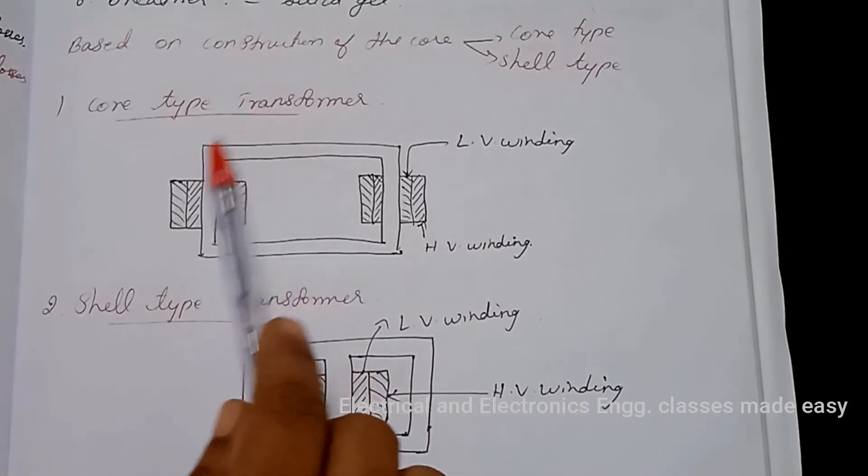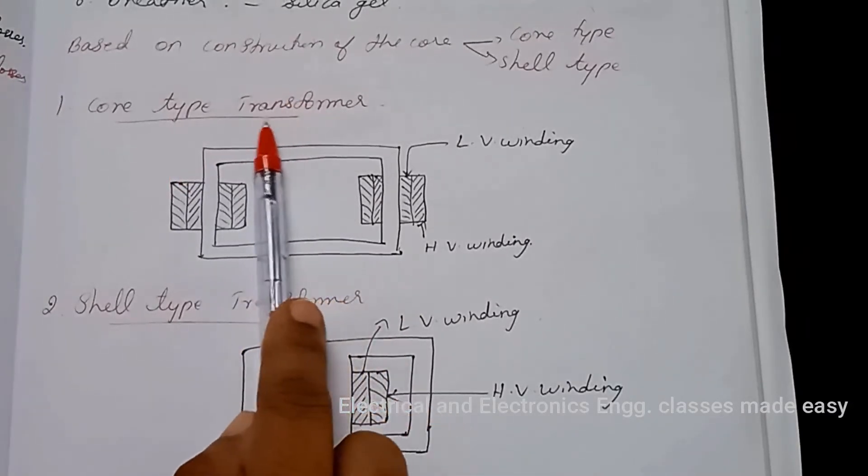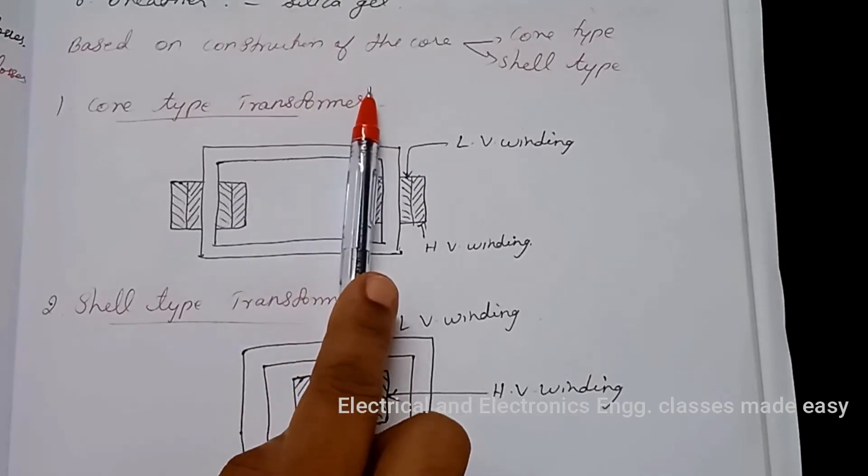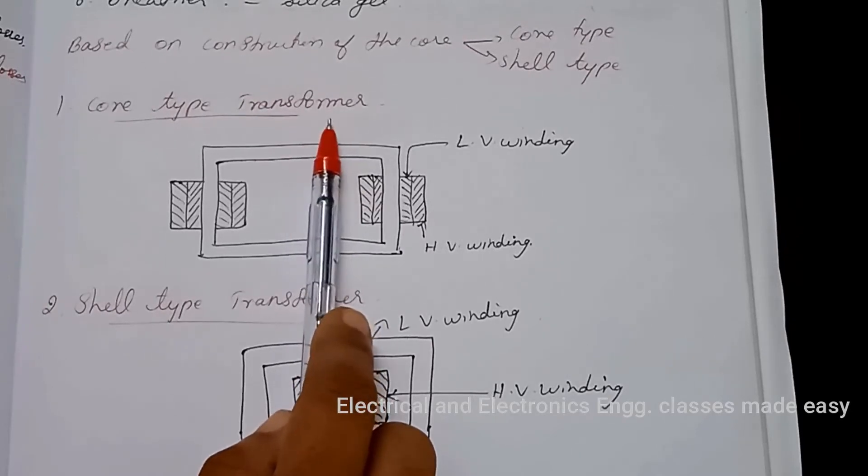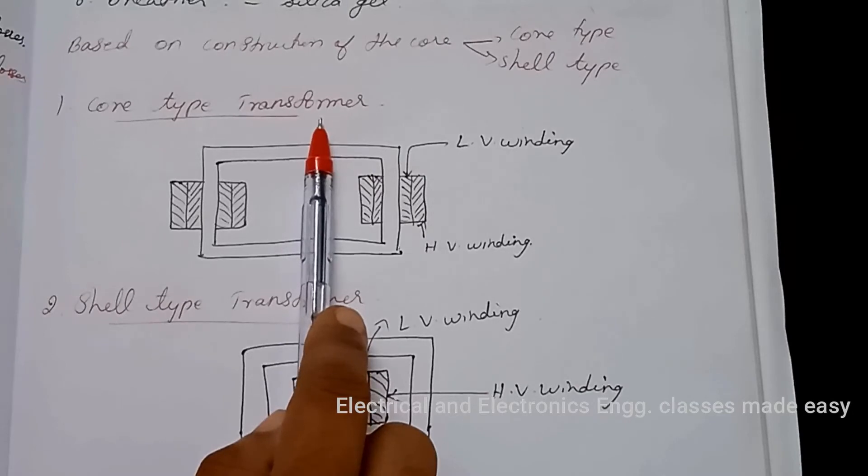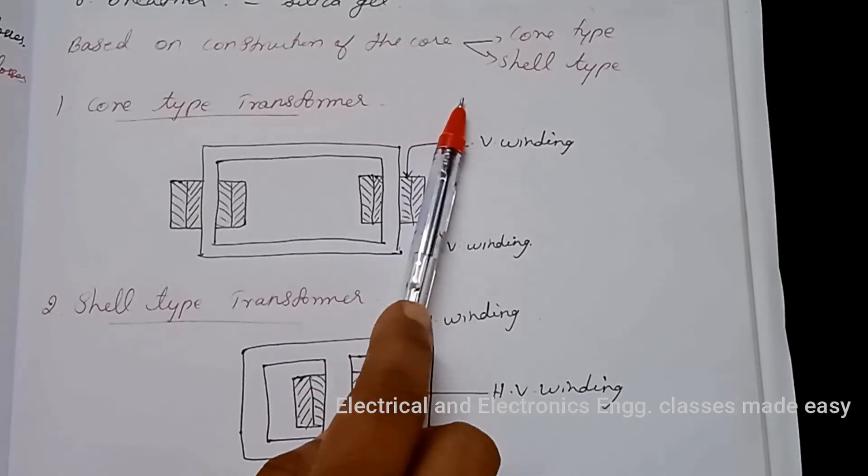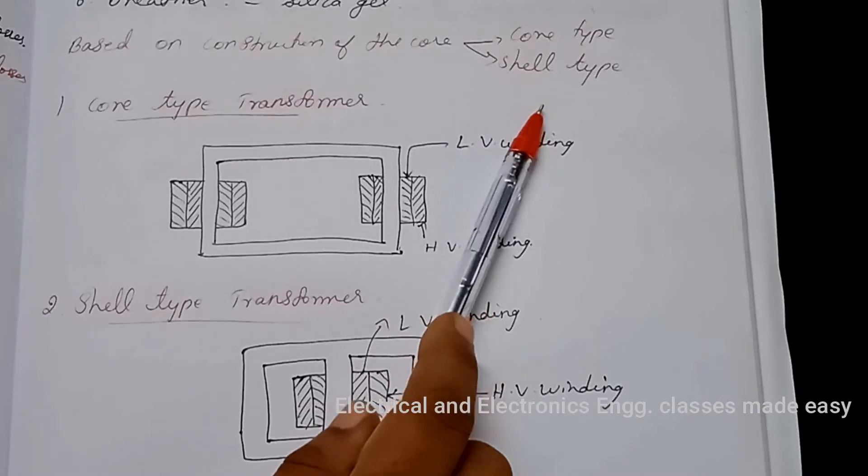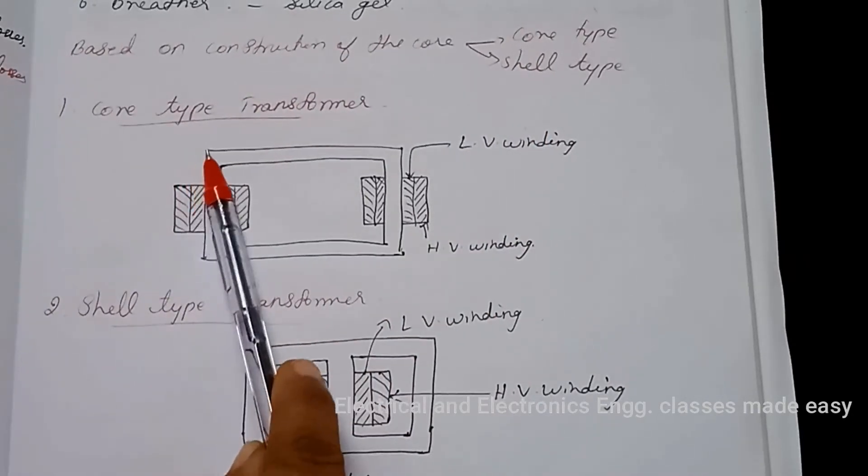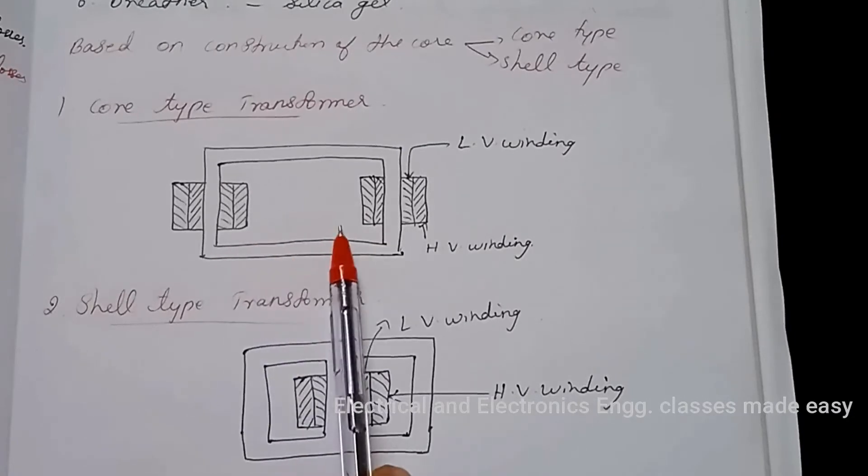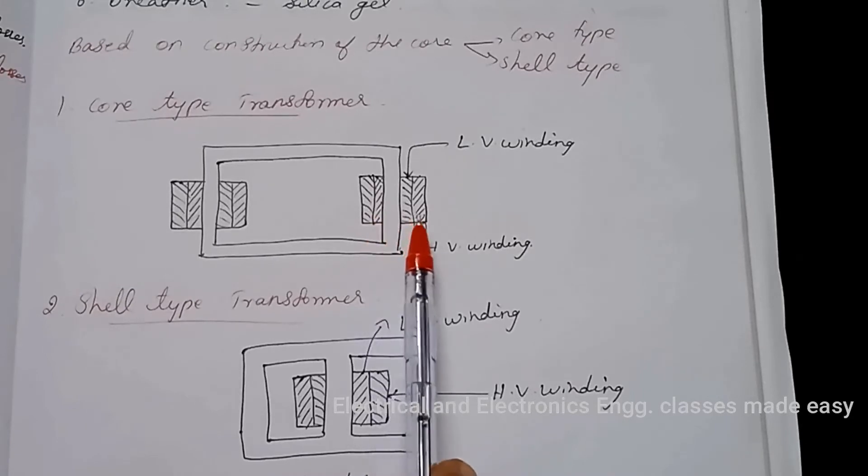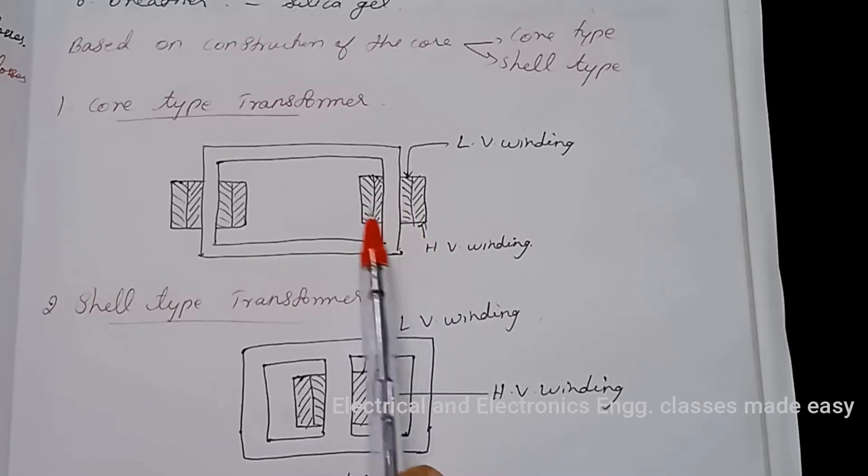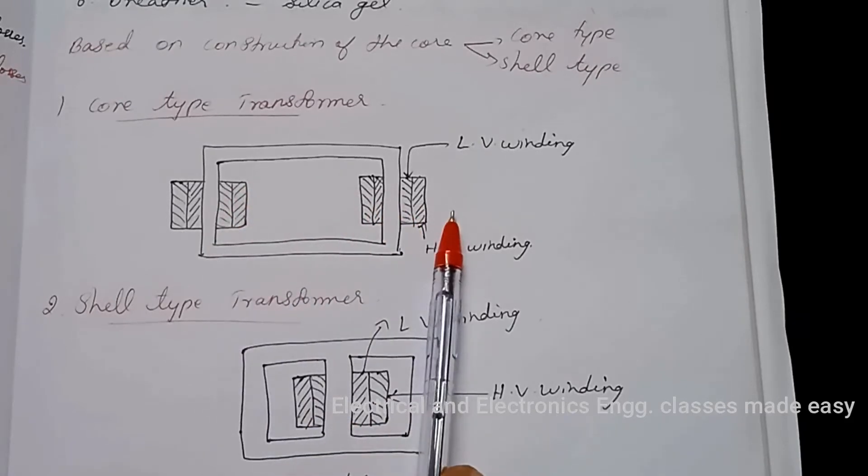Next is types of transformers based on the construction of core. According to the core construction and the manner in which the primary and secondary are placed around it, transformers are classified as core type transformer and shell type transformer. First one, core type transformer. In core type transformer, half of primary winding and half of secondary winding are placed around each limb. This ensures tight coupling between the two windings.